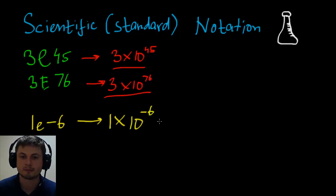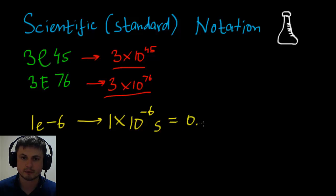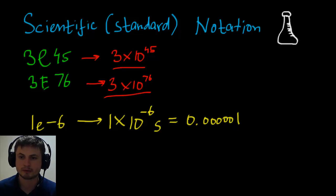Let's say this is seconds — you're looking for something that happened really really quickly. So 1 times 10 to the power of minus 6 seconds. You can actually rewrite this as 0 followed by 5 zeros and then a 1 at the end — that's 0.000001. If you count the digits after the decimal point, there are 6, which is why it's to the power of minus 6.